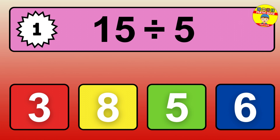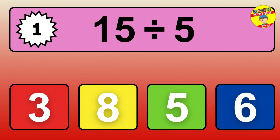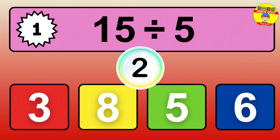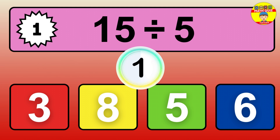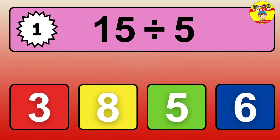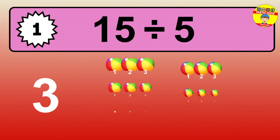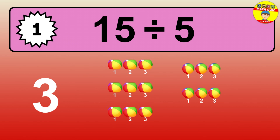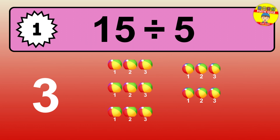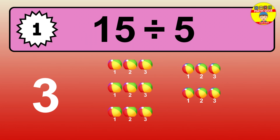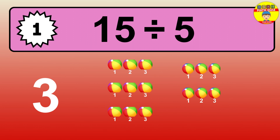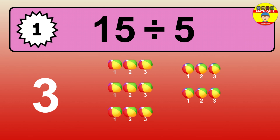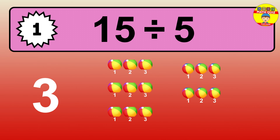15 divided by 5 is… time to think. Let's go to the solution. Divide the number 15 by 5. Each group contains 5 units, so dividing 15 by 5 results in 3 equal groups. Thus, the result is… 15 divided by 5 equals 3.